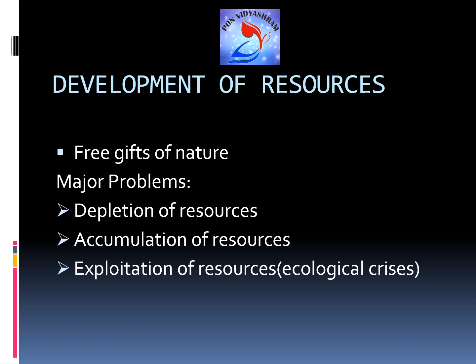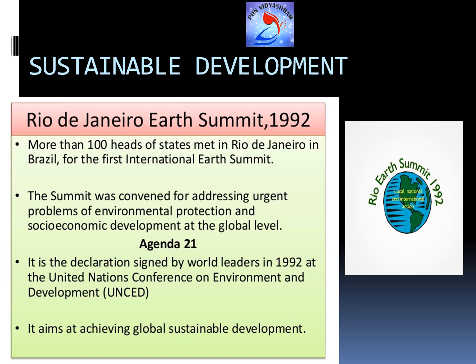Development should happen while resources are also conserved. For this purpose, we have the concept of sustainable development, which means development should take place without damaging the environment, and development in the present should not compromise the needs of future generations. To emphasize this concept, world leaders came together at the international Earth Summit held in 1992 at Rio de Janeiro. The summit addressed the most important problem: how to protect the environment while also focusing on developmental activities. The global leaders agreed to conventions put together as Agenda 21, which was signed by world leaders.